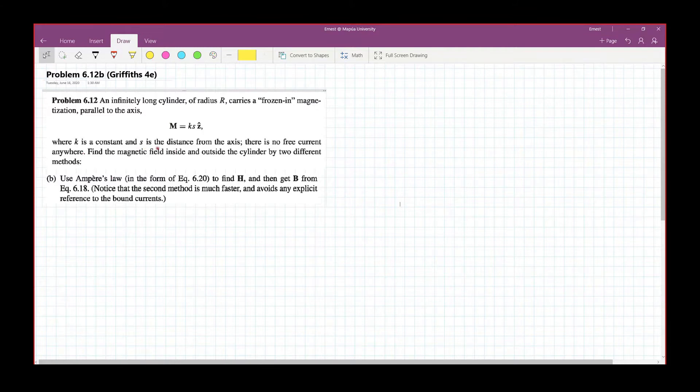Where k is a constant and s is the distance from the axis. There is no free current anywhere. Find the magnetic field inside and outside the cylinder by two different methods.